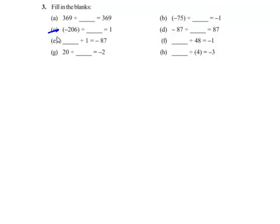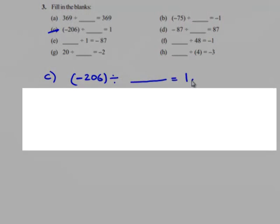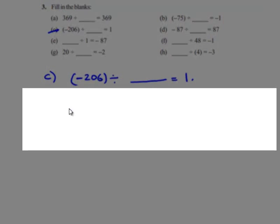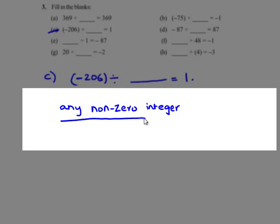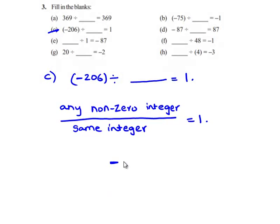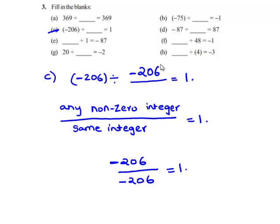We will see the third bit. The question is: negative 206 divided by some integer gives 1. We know that when any non-zero integer is divided by the same integer, we get 1. Which implies, when negative 206 is divided by negative 206, we get 1. Therefore, the answer is negative 206.